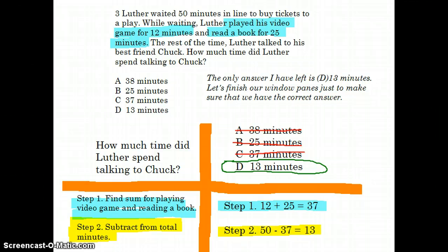Step one, Luther spent 12 minutes playing the video game and 25 minutes reading a book. 12 plus 25 is equal to 37. So in total, in him doing those things, he spent 37 minutes. Now one thing that I want you all to pay attention to is one of the answer choices is 37 minutes. C is 37 minutes.